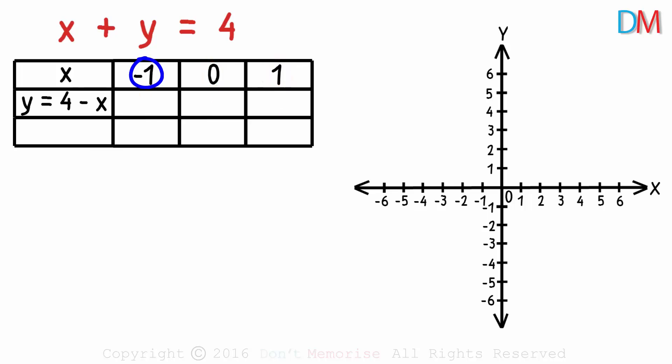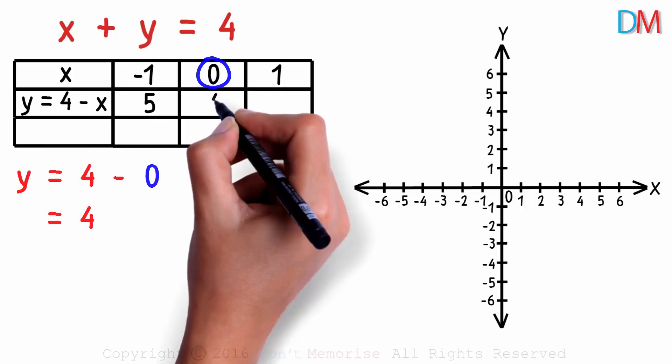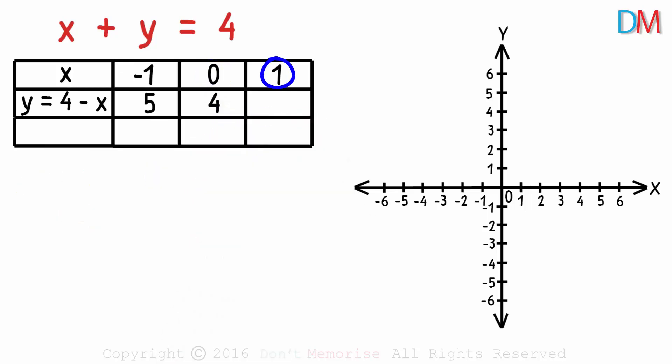If x is negative 1, then y will be 5. Because 4 minus negative 1 will give us 5. If x is 0, then y will be 4. And if x is 1, then y will be 3.